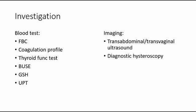For imaging investigation, we can do transabdominal or transvaginal ultrasound to look for the origin of the tumour, the site, size, and nature, just to confirm these features of the tumour. We can also measure the endometrial thickness, distinguish between fibroid and ovarian mass, and exclude hydronephrosis based on the ultrasound.